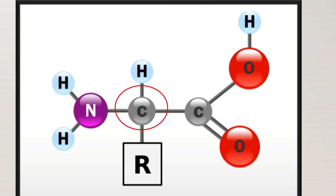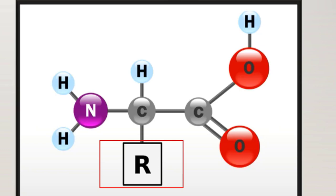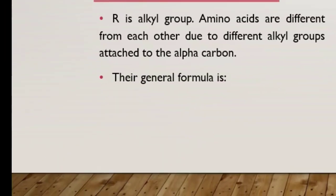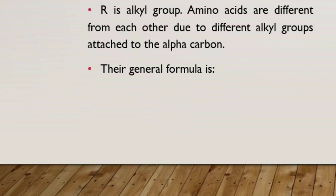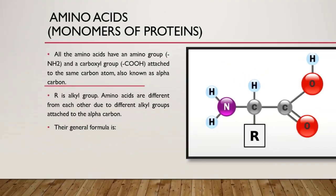اس carbon کو alpha carbon کہا جاتا ہے. اسی alpha carbon کے ساتھ ایک side chain attach ہوگی جو کہ کوئی بھی alkyl group ہو سکتا ہے. And the amino acids differ from each other on the basis of this side chain. Simplest amino acid glycine ہے جس کے اندر یہ side chain صرف H پر مشتمل ہوگی. اس کے بعد مختلف alkyl groups اس alpha carbon کے ساتھ attach ہوتے جائیں گے اور different amino acids بنتے جائیں گے.